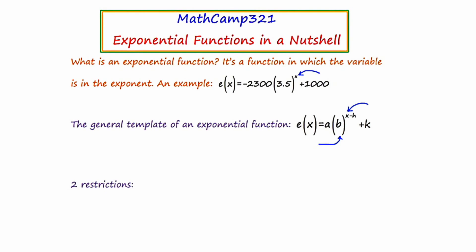For this slide, I want you to know that there are two restrictions on the base b. b can never be negative — b must be greater than zero — and also b cannot equal one. So whenever you have an exponential function, the base of the exponent will never be negative and will never be one; otherwise, it's no longer considered an exponential function.